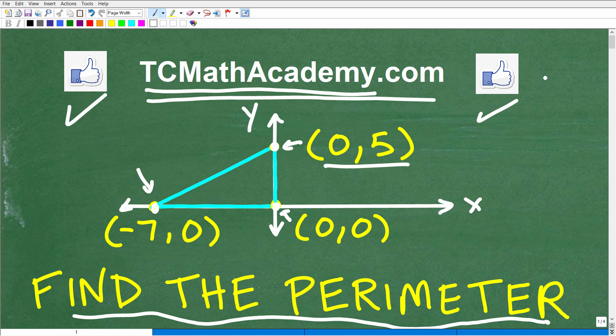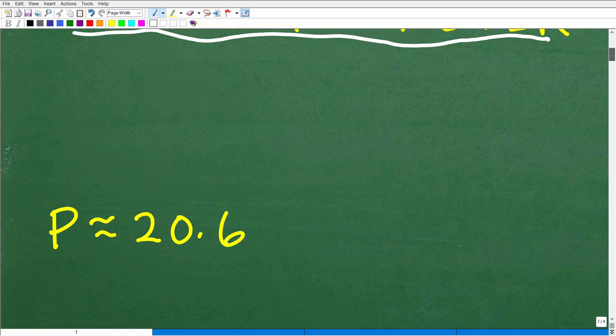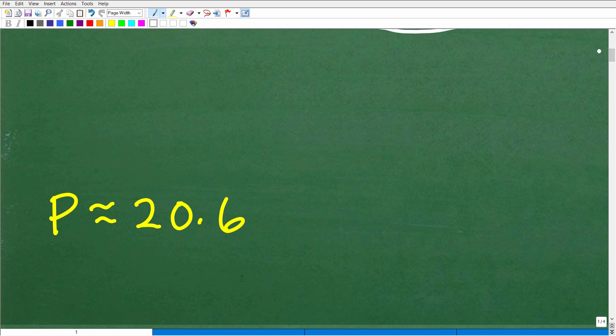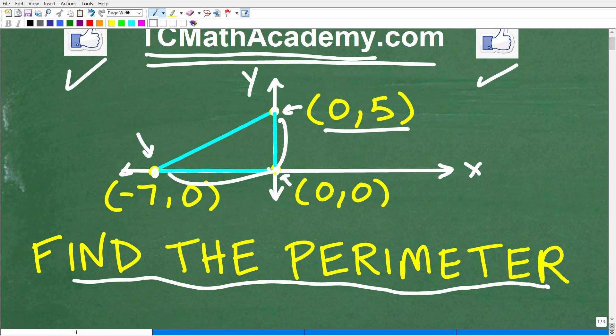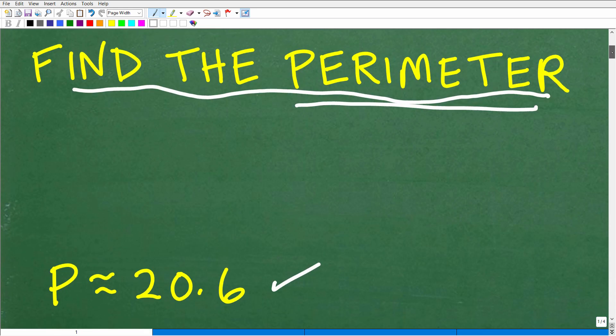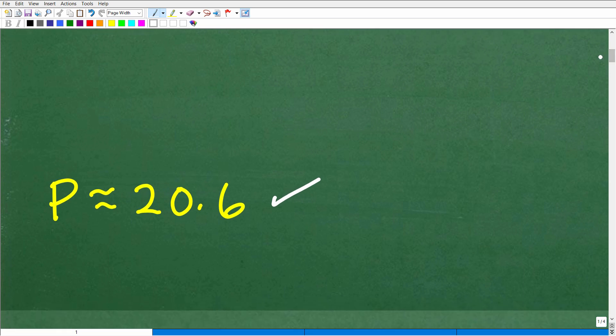So let's get into this problem, but before I show you how to solve it, I'm going to show you the correct answer right now. The perimeter is approximately 20.6. Now, I don't have actual units here—we don't have inches or centimeters or millimeters—but you need to be aware that perimeter is a measurement of distance or length. In this particular case, the perimeter is approximately 20.6.